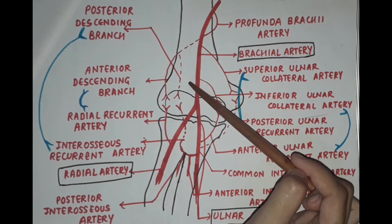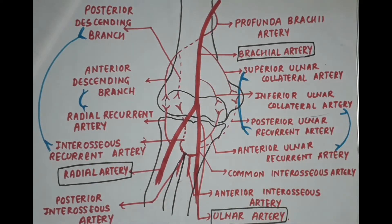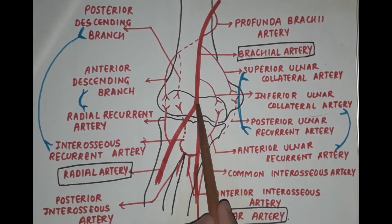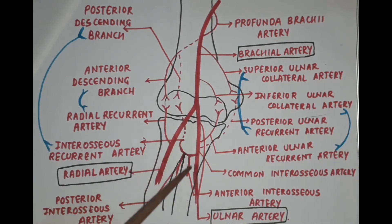The brachial artery is the main artery of the front of the arm. To watch my video on the axillary artery or the brachial artery, check out the links provided in the description box. The brachial artery divides into two terminal branches — the lateral one being the radial artery and the medial one being the ulnar artery.